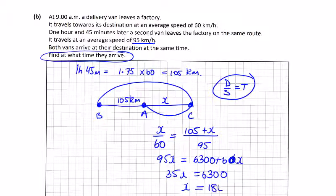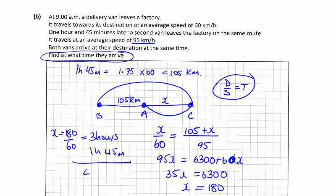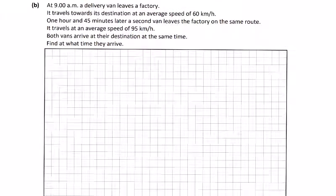We're asked to find what time they arrive. So if x is 180, he's gone at 60. 180 divided by 60 is 3 hours, plus the one hour 45 is 4 hours 45. So 9 a.m. plus 5 hours will be 2 p.m., so 1:45 p.m. is the time that these vans arrive.